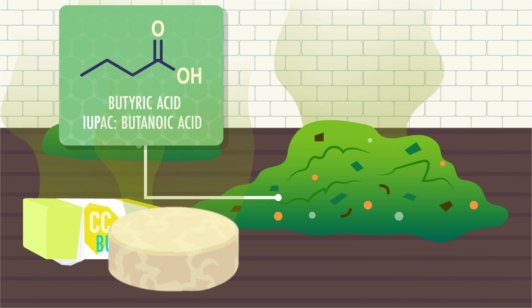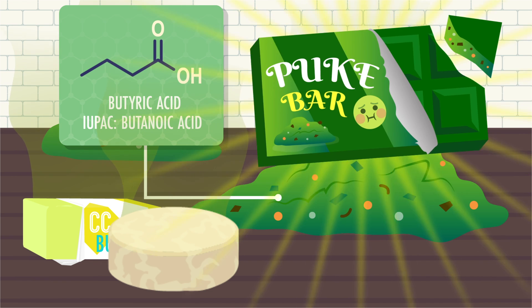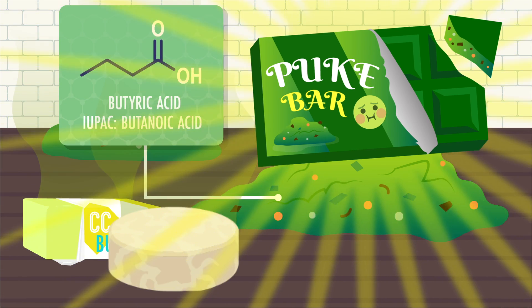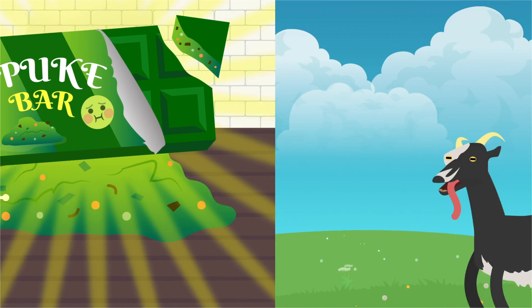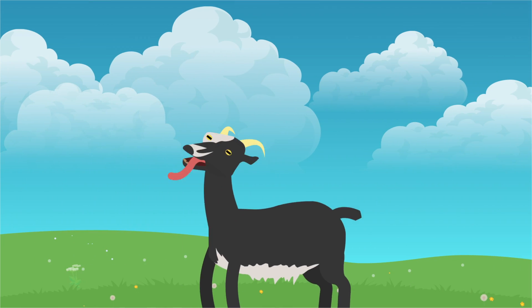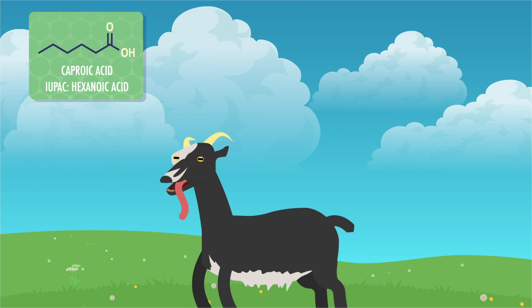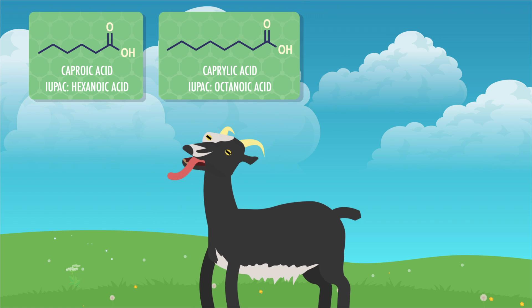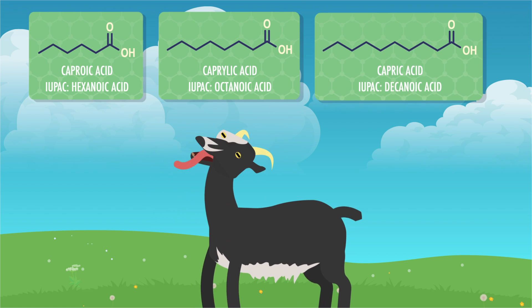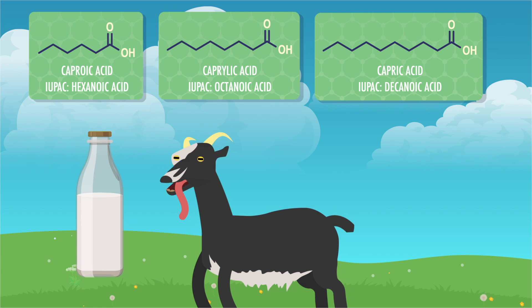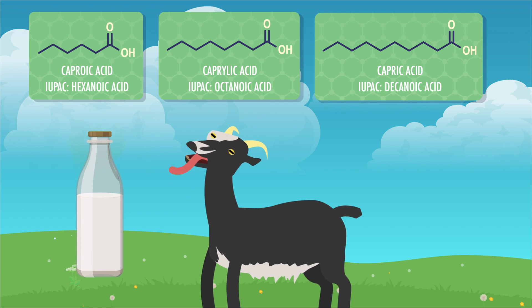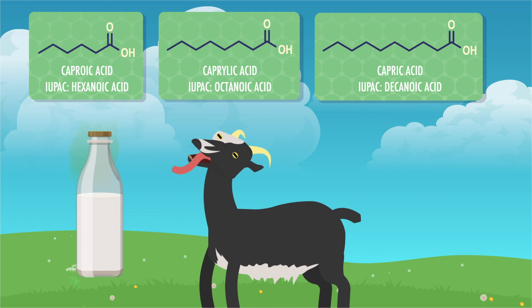Butyric acid is also added to some brands of American milk chocolate to give it a tangy flavor. Yes, I basically just said that puke-flavored chocolate exists, and now it's gonna haunt me forever. And three carboxylic acids take their common names from the Latin word for goats – caproic acid, caprylic acid, and capric acid. Found in small amounts in goat's milk and produced in larger amounts as the milk ages, they contribute to that goaty stench.